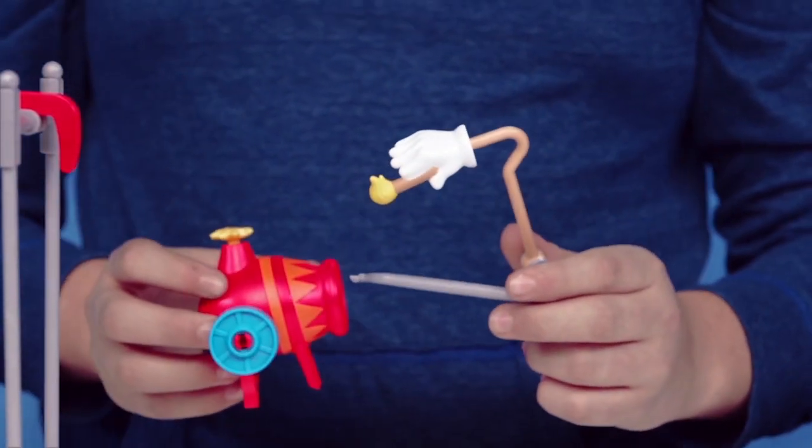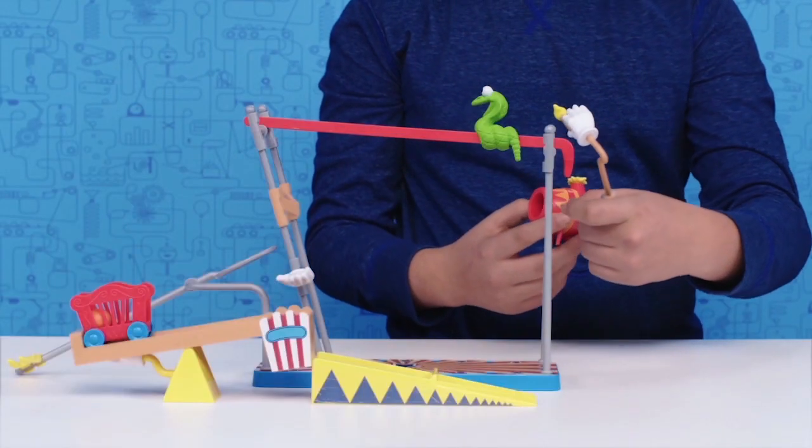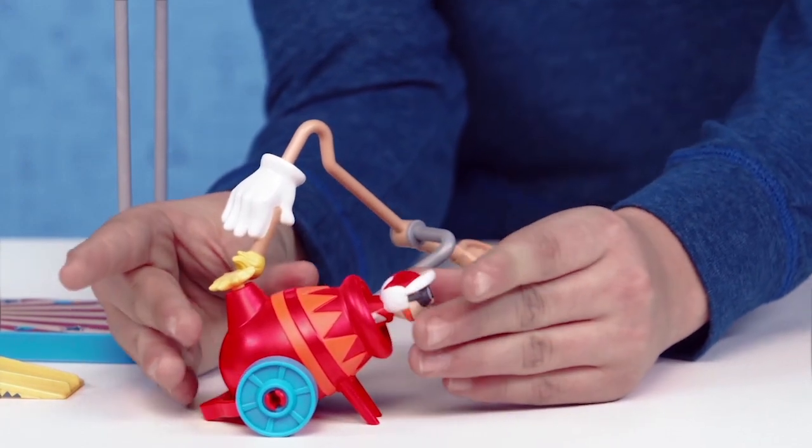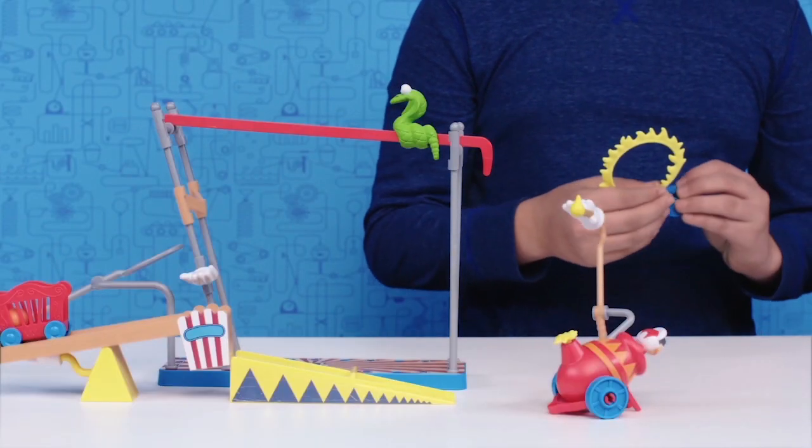Let's get this cannon fired up with the racket pole on the left side of the cannon. Load the acrobat Rube figure into the cannon. Set up the flaming hoop.